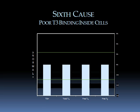The sixth cause is the poor binding of T3 to receptors inside of cells. When we're doing blood tests — TSH, total T4, free T4, and free T3 — they can all be normal because these are only measuring what's in the blood. They do not measure what's actually going on inside of cells.